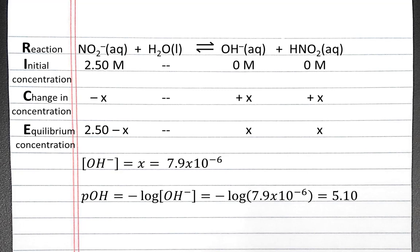To calculate pH, we'll take 14 minus pOH, which is 8.90. So the pH of our 2.5 molar sodium nitrite solution is 8.90.